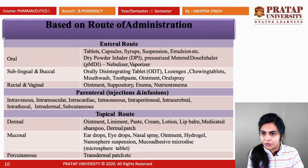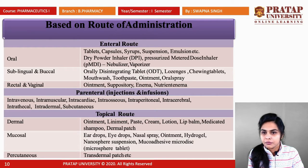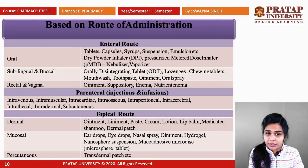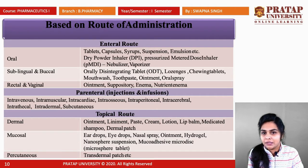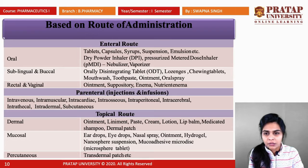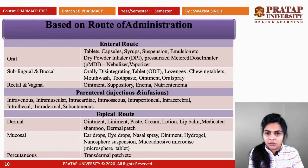As per the route of administration, the enteral route includes the oral route — tablets, capsules, syrups, suspensions, emulsions, dry powder inhalers, pressurized metered dose inhalers like nebulizers and vaporizers. For the sublingual and buccal route, there are orally disintegrating tablets (ODT), lozenges, ointments, toothpaste, and mouthwashes.